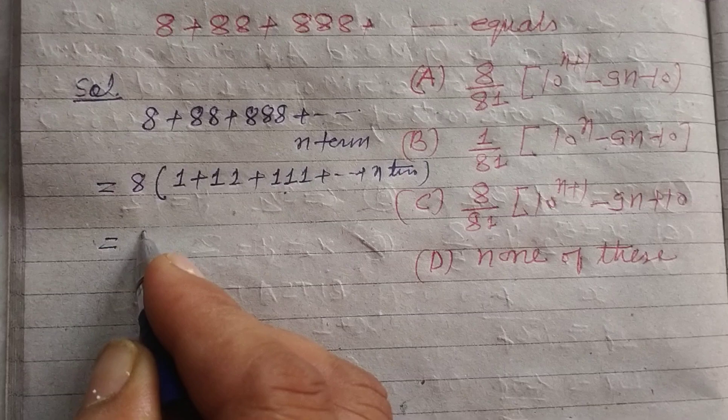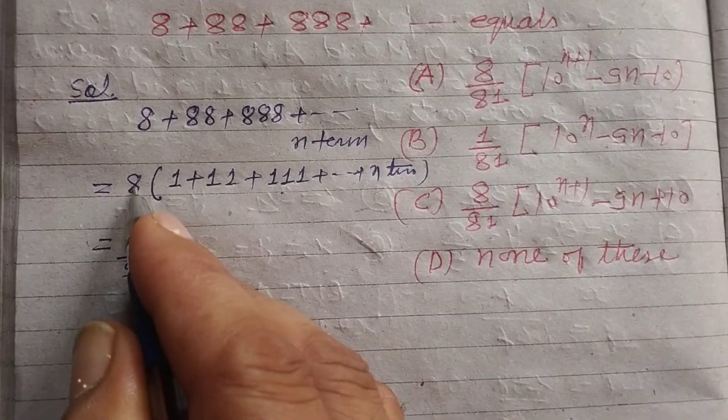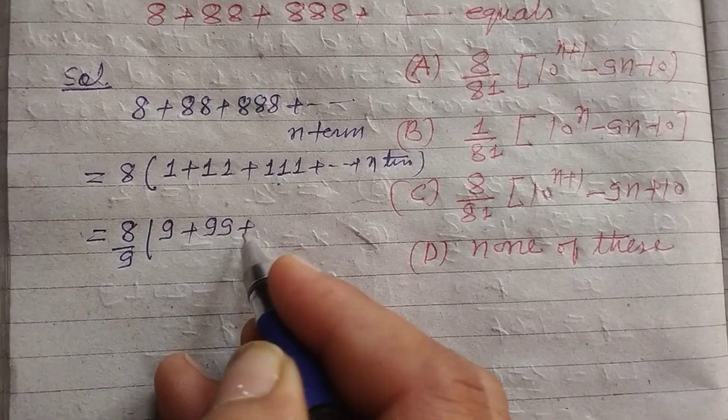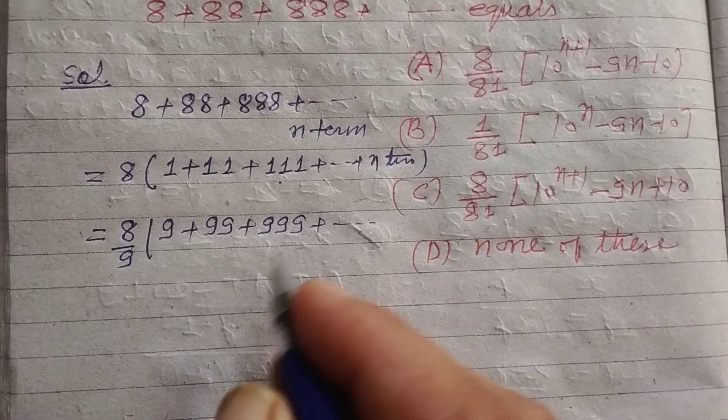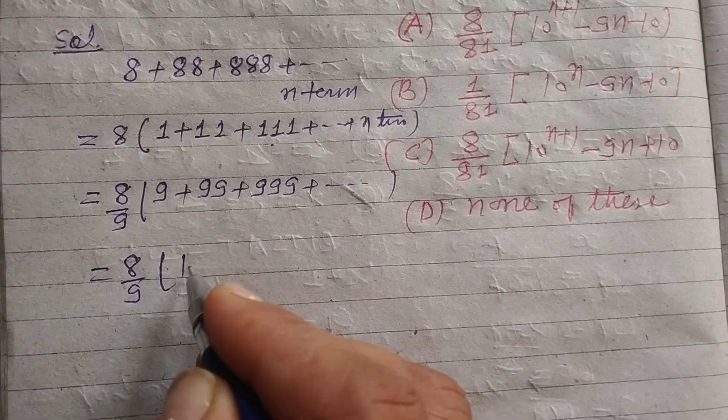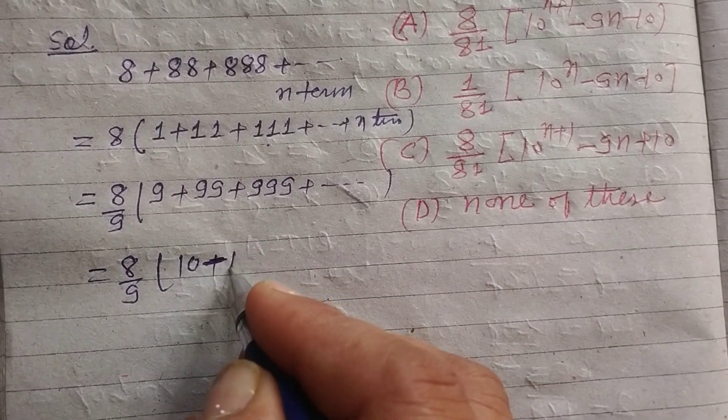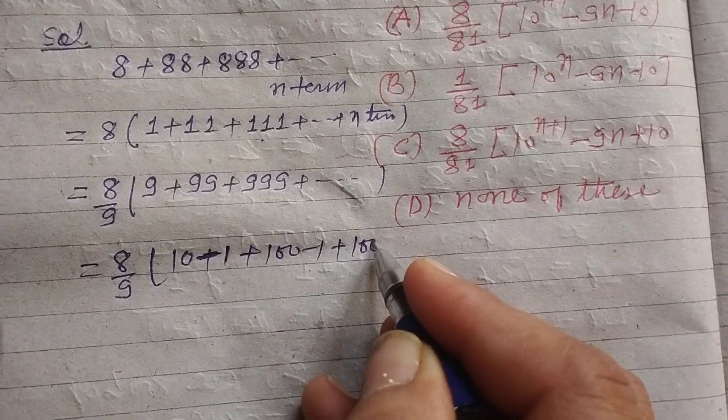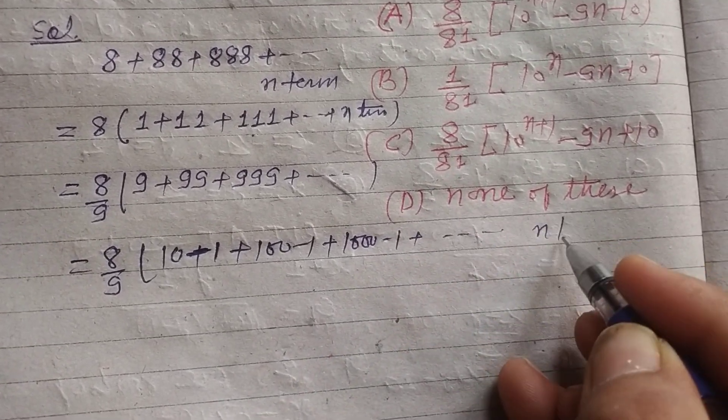Now we multiply both numerator and denominator by 9. So this is 9, 99, 999 plus and so on. So 8 upon 9, we can write 9 as 10 minus 1, 99 as 100 minus 1, plus 1000 minus 1, plus and so on up to n terms.